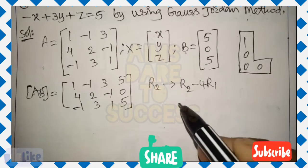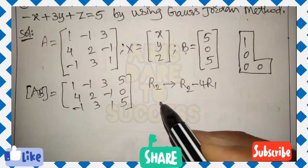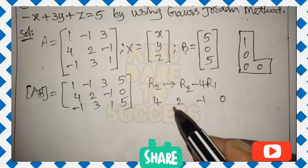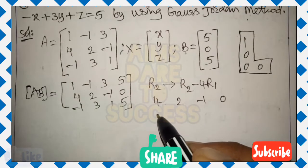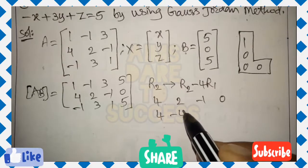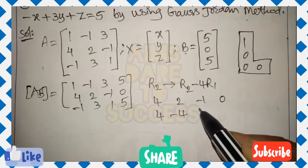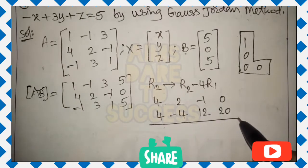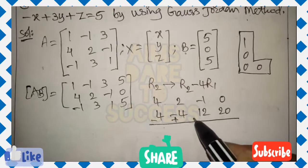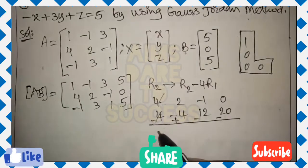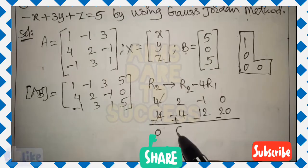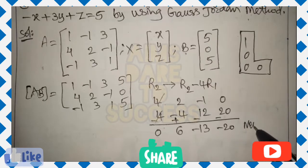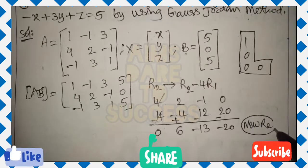To get 0 as the first element of row 2, apply R2 = R2 minus 4 times R1, because both have 4 in the first position and subtracting gives 0. Computing: 4 minus 4 = 0; 2 minus 4×(minus 1) = 2 + 4 = 6; minus 1 minus 4×3 = minus 1 minus 12 = minus 13; 0 minus 4×5 = minus 20. New R2: 0, 6, minus 13, minus 20.